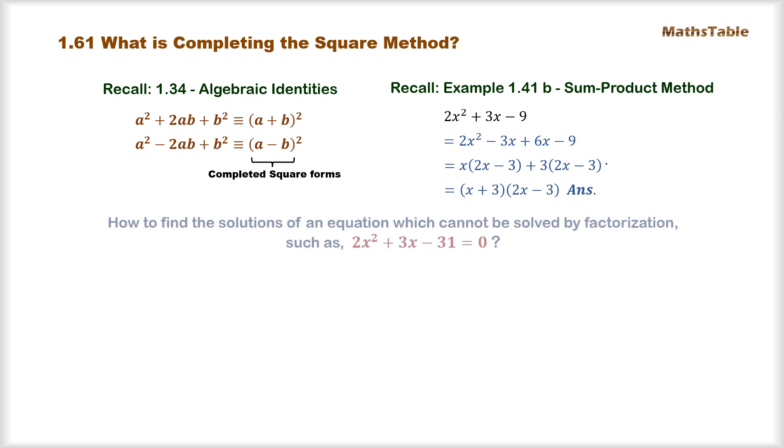But sometimes we are given equations of a kind in which we cannot apply this factorization method. Such as in this equation 2x² + 3x - 31 = 0, we can see that we cannot find a method to break this middle term into two parts such that we can get the final factorized form of such an equation. So for such kind of equations we need to find some other methods.